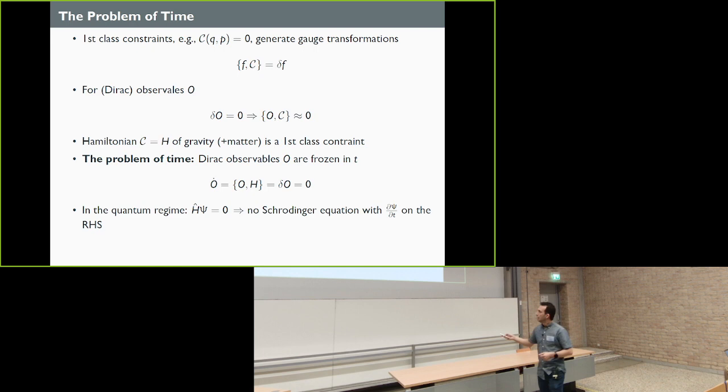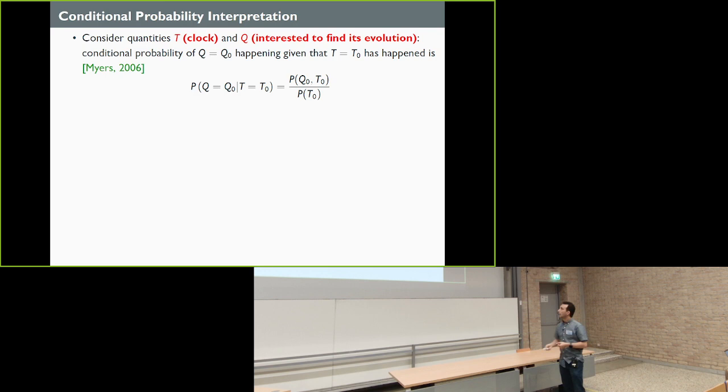In the quantum regime, all the physical states should be destroyed by all the first class constraints. Hamiltonian is the first class constraint, it should destroy the states. This means that you don't get a Schrodinger equation which on the right-hand side you get this time evolution, you only get zero. So it means that again, you have a frozen framework for your system. So this is the sense of the problem of time.